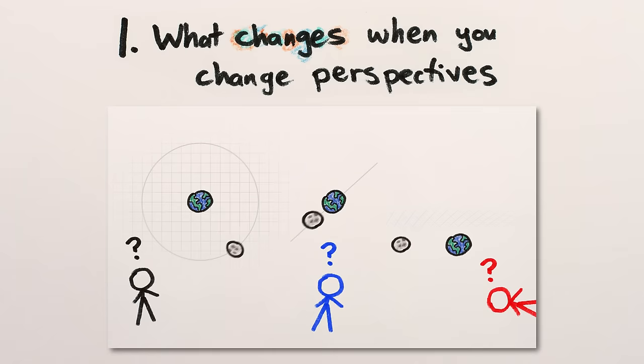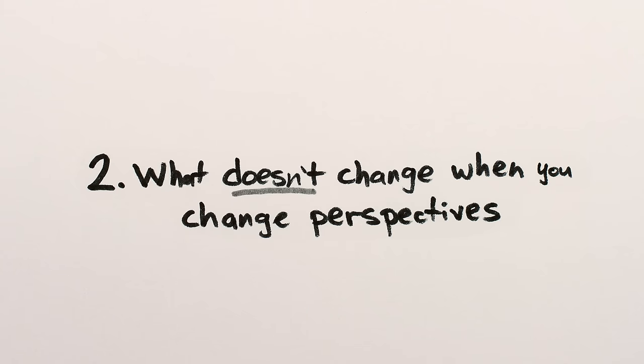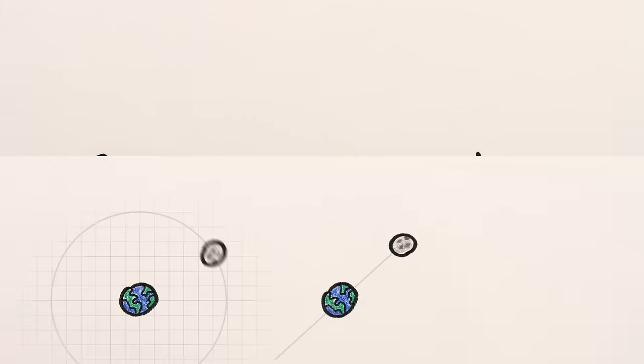We've already given an example of number one, with different ways the motion of the Earth and Moon can look from different perspectives. Number two, the idea of finding things that don't look different from these perspectives? That's a little trickier.